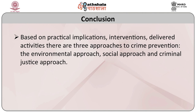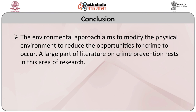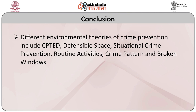Conclusion. The three basic approaches to crime prevention are through the environment, social process, and the criminal justice system. The environmental approach aims to modify the physical environment to reduce opportunities for crime. A larger part of the literature on crime prevention rests on this area of research. Different environmental theories of crime prevention include CPTED, defensible space, situational crime prevention, routine activities, crime pattern theory, and broken windows.